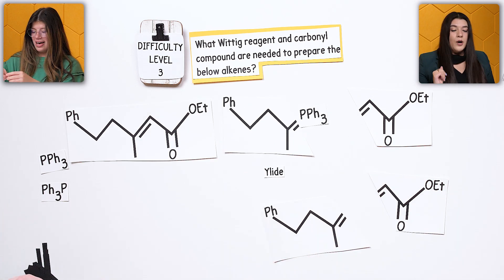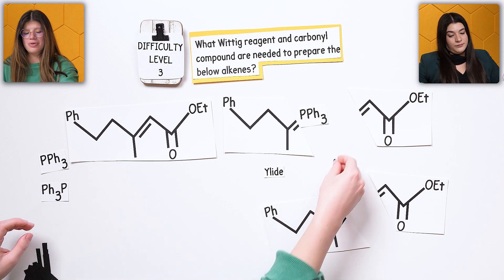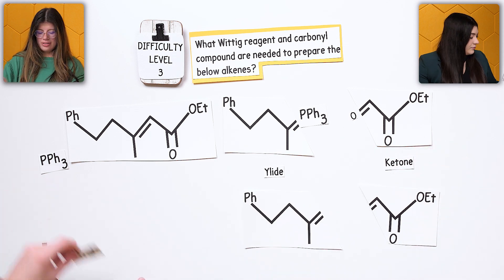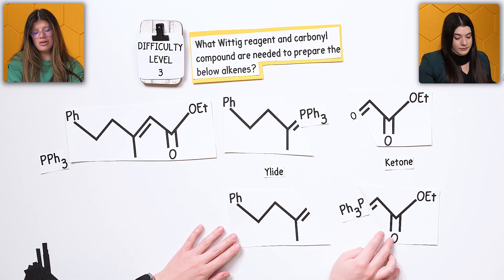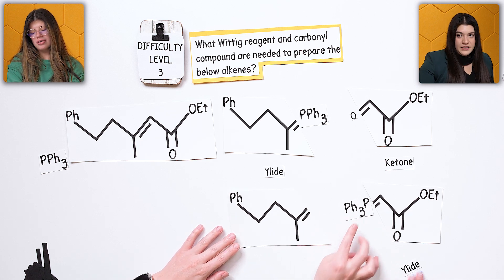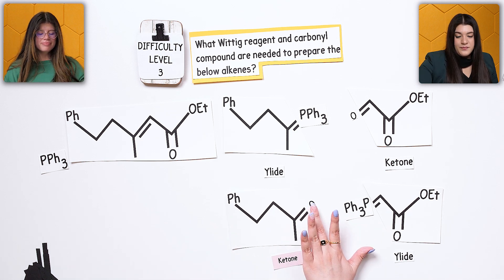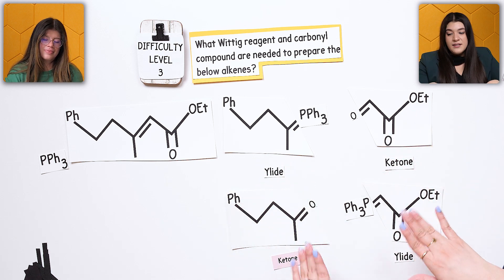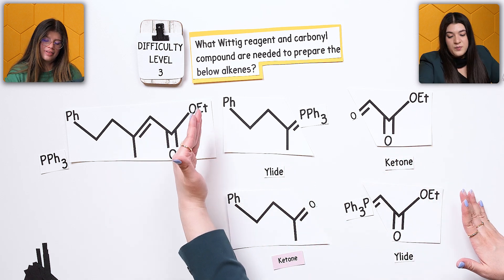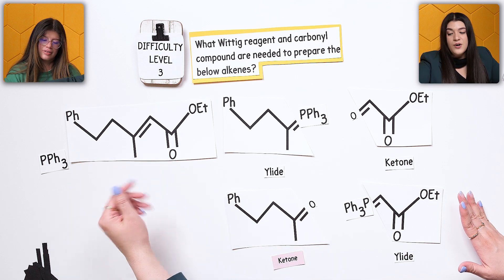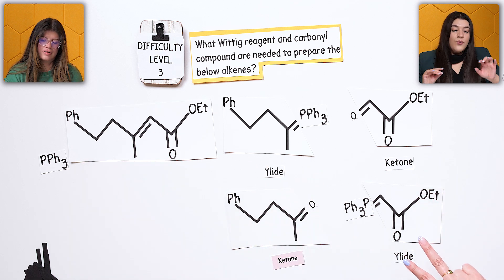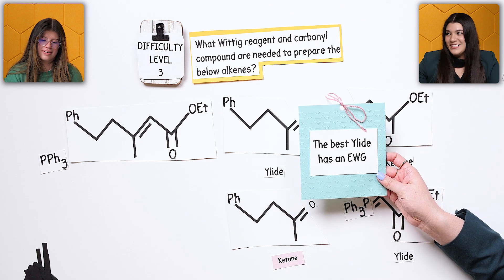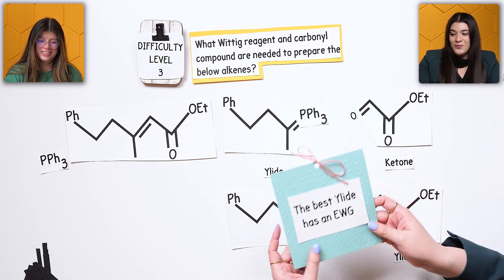One option: this fragment is our ylid, and the other piece is our ketone. In the second option, we switch them — that becomes our ylid. Going back to what you said: yes, there are technically two options since one side could be the ylid and the other could be the ketone, and vice versa.